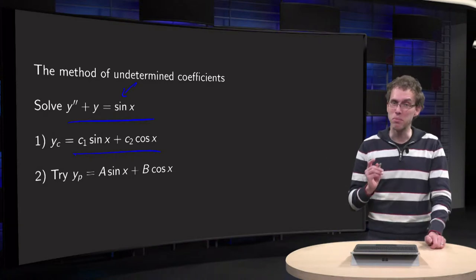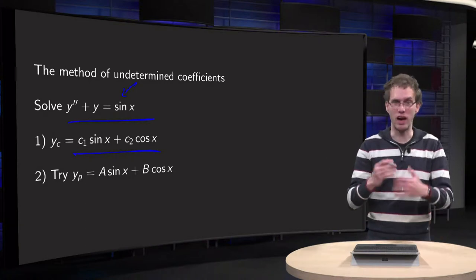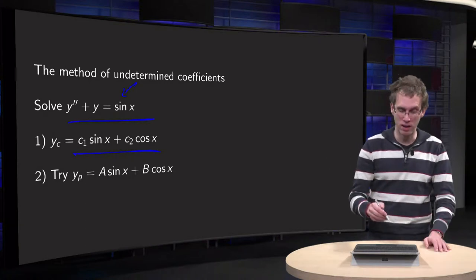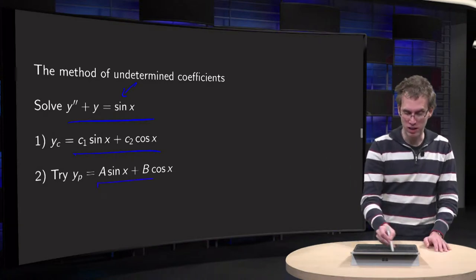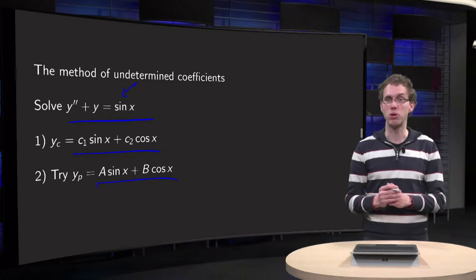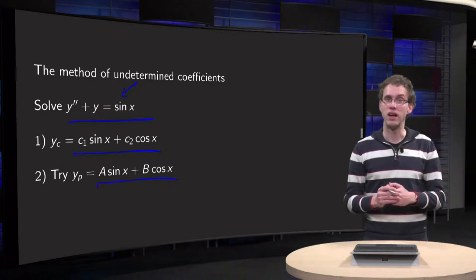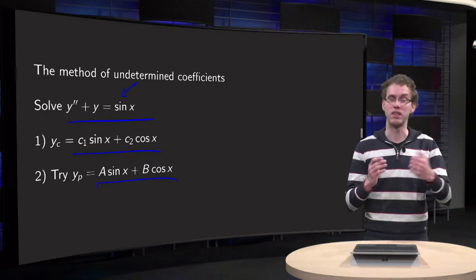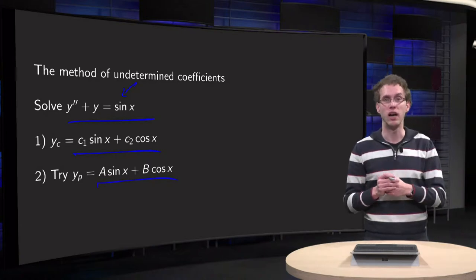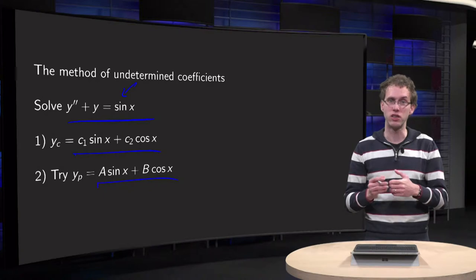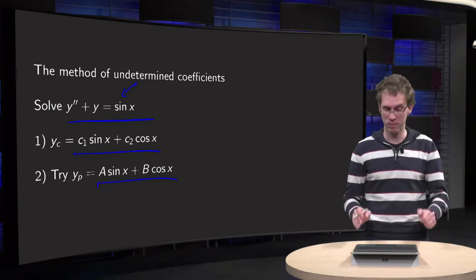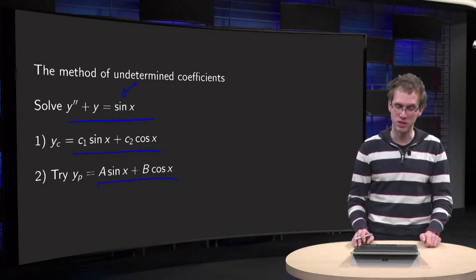What happens if you just try A·sin(x) + B·cos(x) as our particular solution, as we would normally? What happens then?